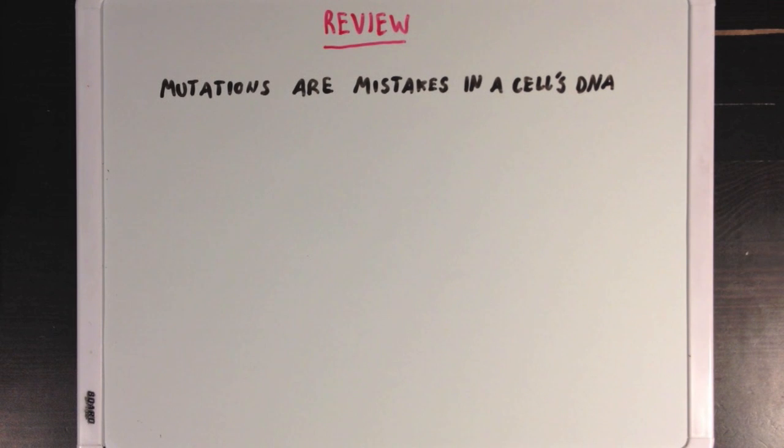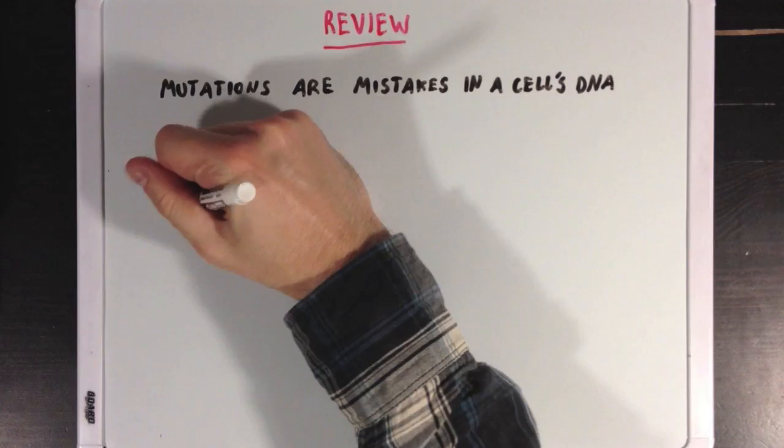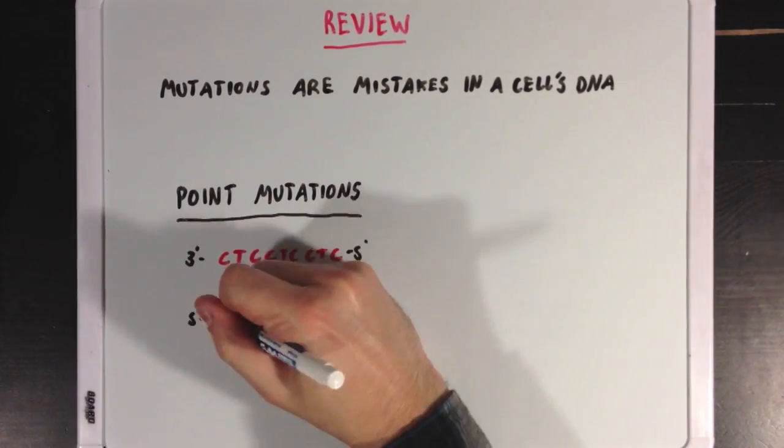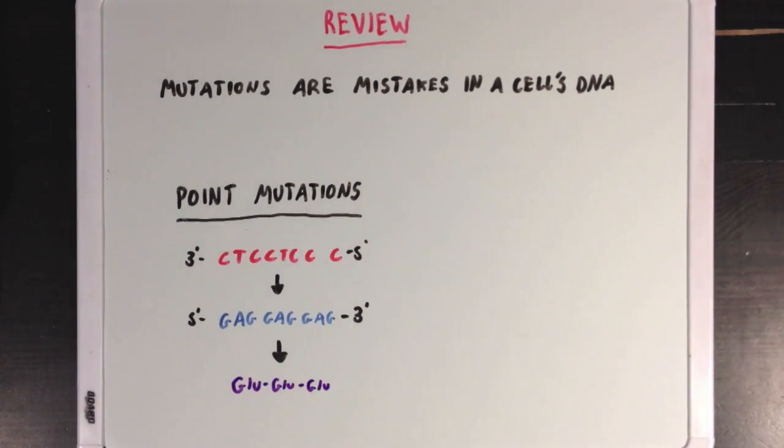And there are two main types of mutations that we see when we look at a cell's DNA. The first is called point mutations, and that's when one DNA base is switched out for another, which usually results in a change to one codon in the RNA sequence.